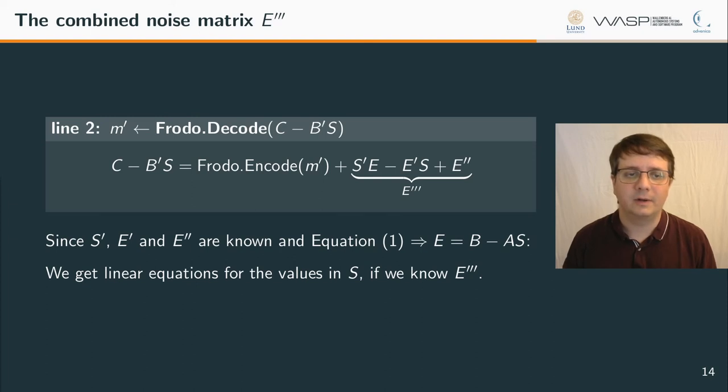From this, we can see that we will have linear equations for each entry in the secret key matrix S, if we can only figure out the value of E triple prime. Each time we run our attack algorithm, we get the value of a single entry in the combined error matrix E triple prime. Such entry provides us with a single linear equation of the secret matrix S. Therefore, we need to collect roughly as many entries as we have entries in S.